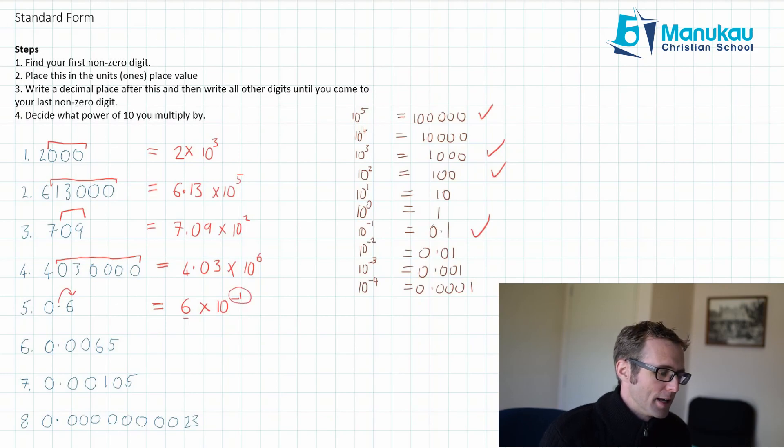Let's try another one. 0.0065. So I write 6, then I put my decimal, go to my last non-zero digit, which is a 5. Now, what am I timesing by? Let's count backwards: 1, 2, 3. To get that 6 from the units to the thousandths place, I've got to times by 10 to the negative 3.